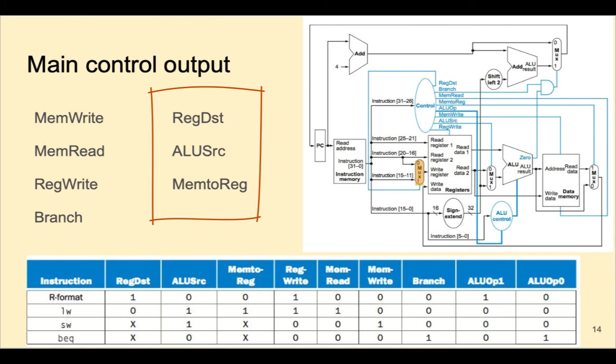For example, for regdest, the RD field points to 1 for R instructions, and the RT field points to 0 for loadWORD.